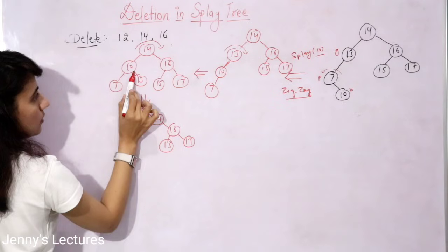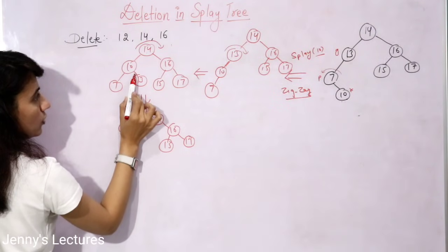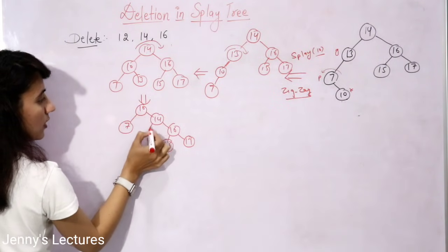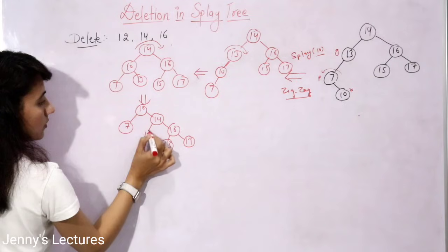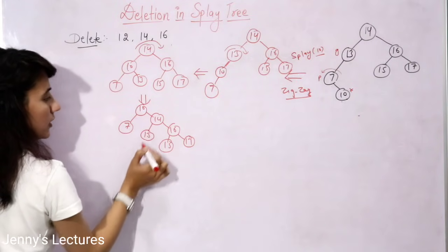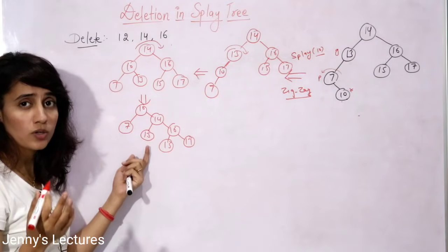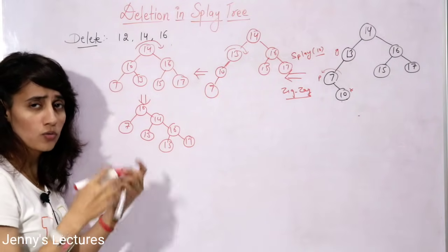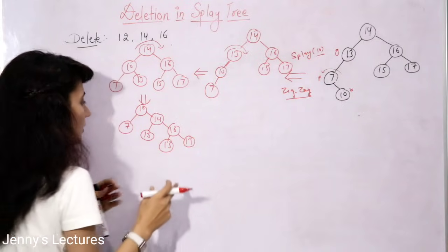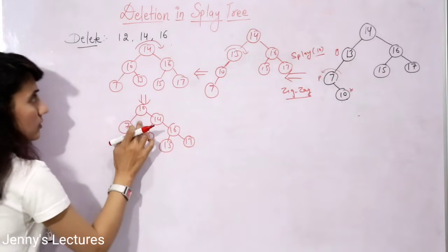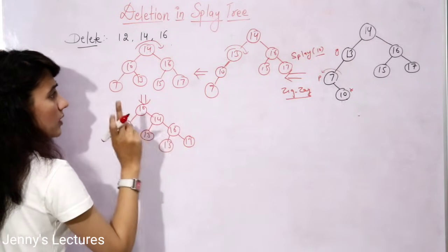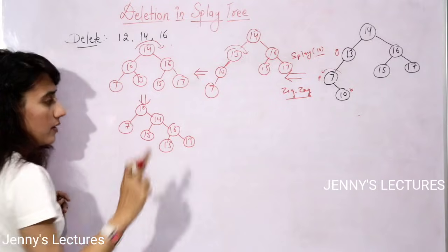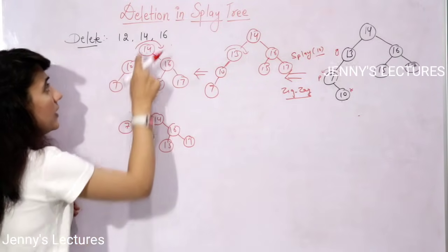After this right rotation, 13 moves to the right of 10 but left of 14. This completes the splaying step. The tree is now the result after deletion of 12.